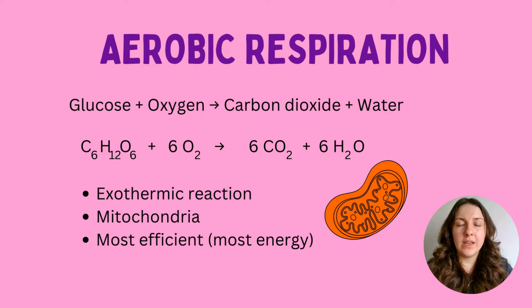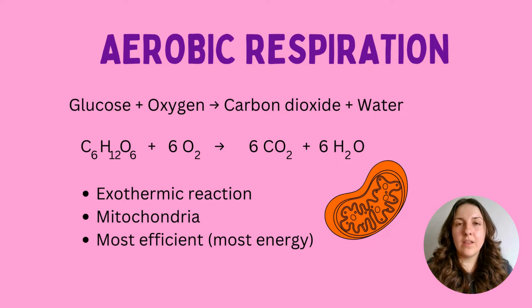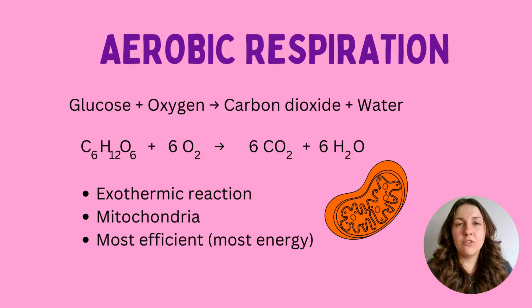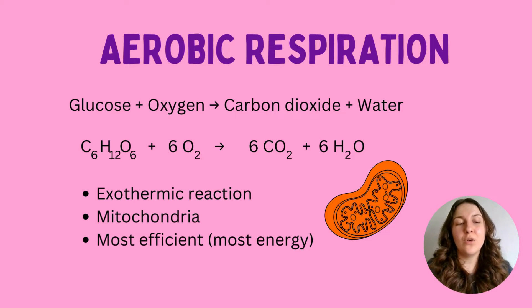In aerobic respiration, carbon dioxide and water are produced as by-products. This process occurs in the mitochondria found within cells — most abundantly in muscle cells. It's a very efficient process because it releases the most amount of energy per glucose molecule, and this is something we're doing right now without even realising it.